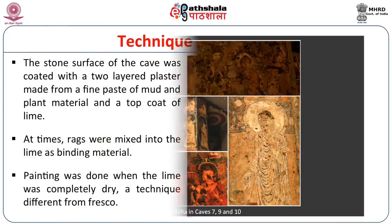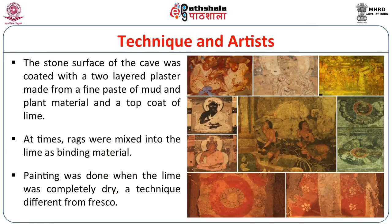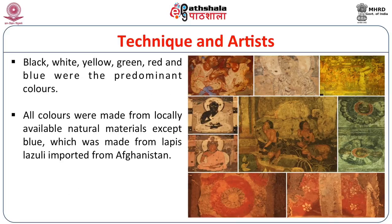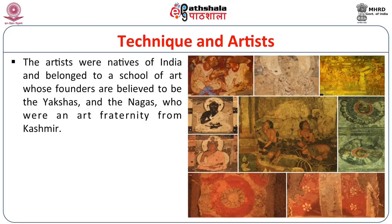The stone surface of the cave was decorated with two-layered plaster made from a fine paste of mud and plant material with a top coat of lime; at times, rags were mixed into the lime as binding material. Painting was done when the lime was completely dry — a technique different from fresco. Black, white, yellow, green, red and blue were the most predominant colors, all made from locally available natural materials except the blue, which came from lapis lazuli imported from Afghanistan. The artists were natives of India and belonged to a school of art whose founders were believed to be yakshas and nagas, an art fraternity from Kashmir.